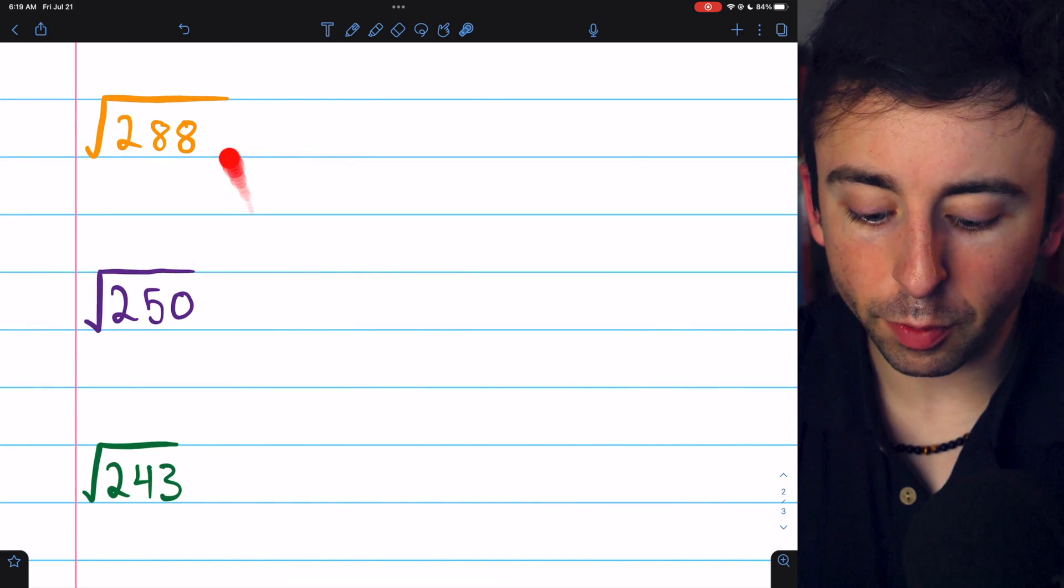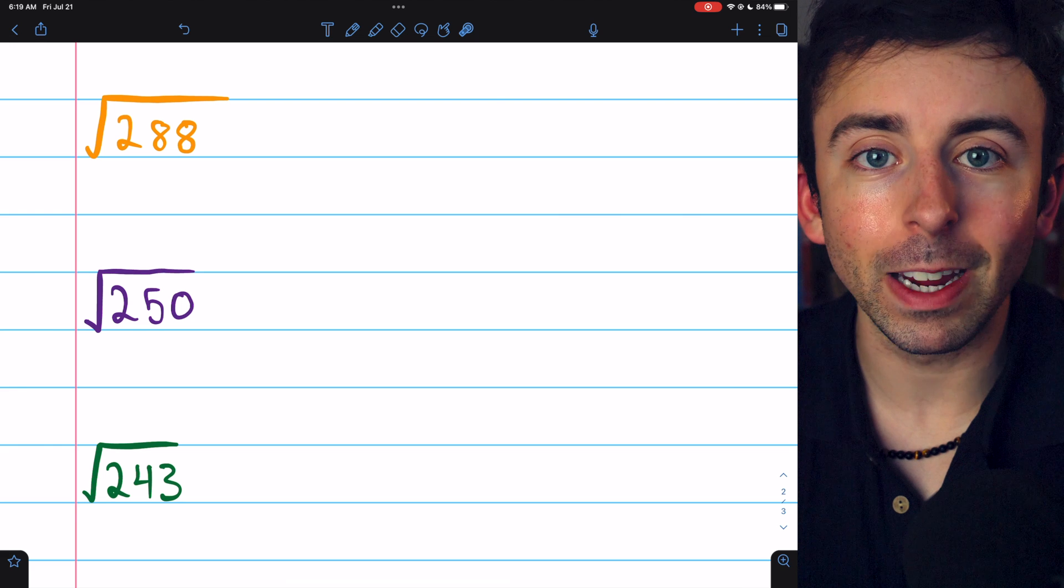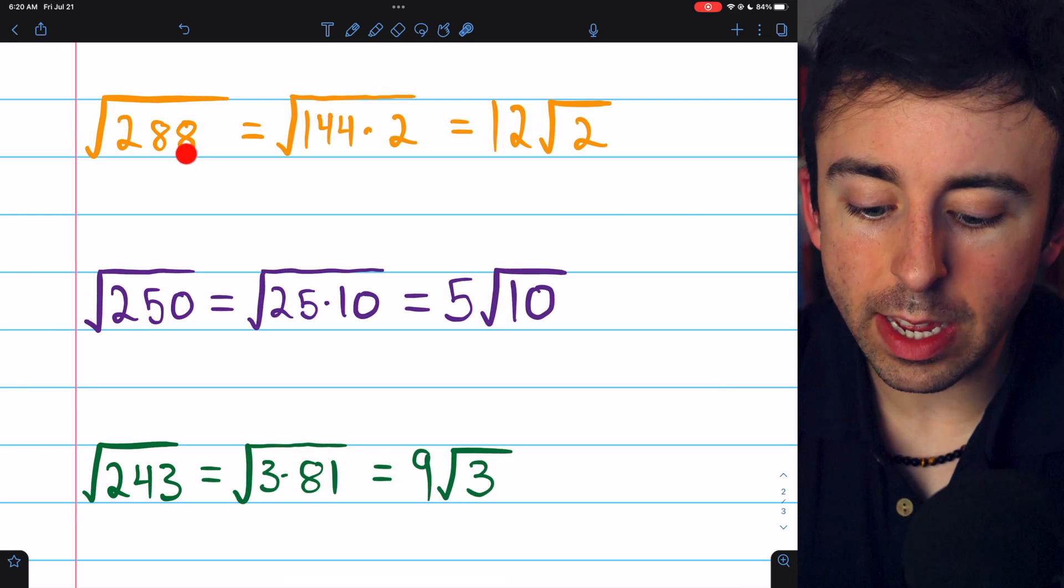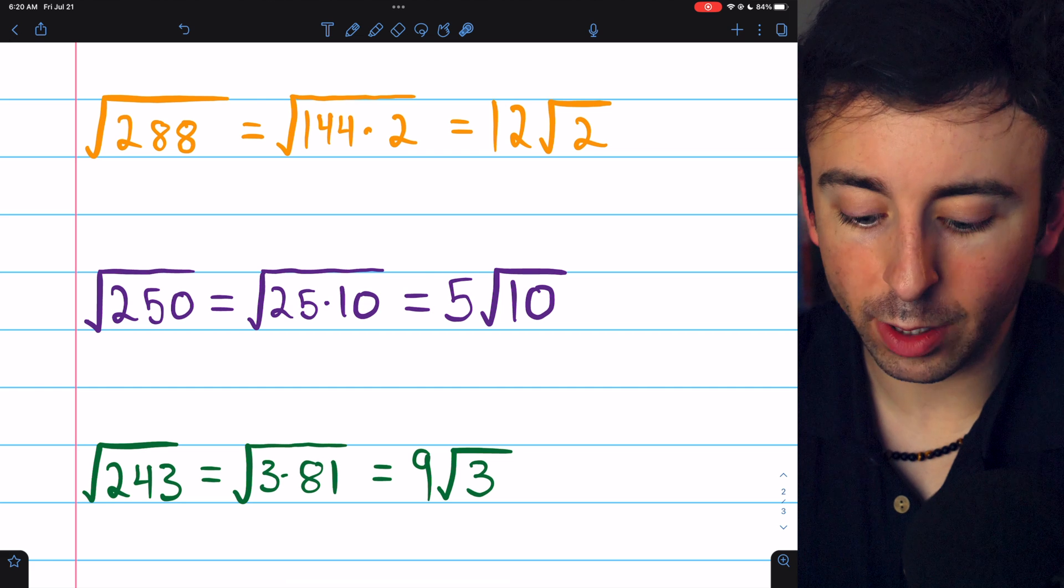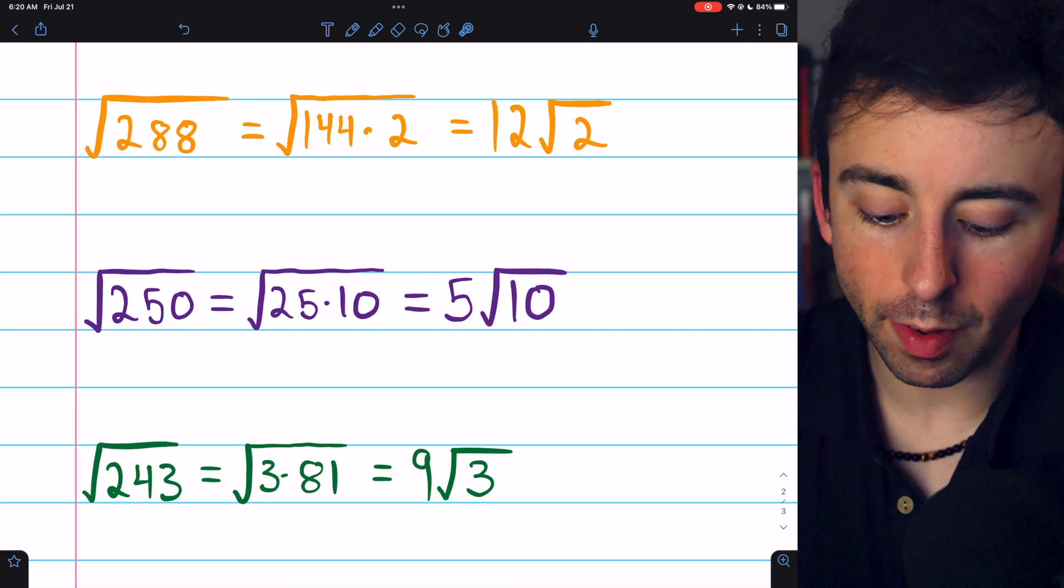Here are three more examples for you to try simplifying yourself. I'll put the answers on screen now. And there they are. Notice, 288 is even. That's how we knew to take out a factor of 2.